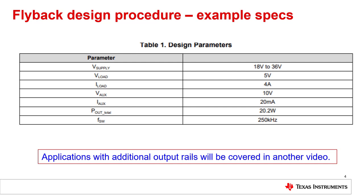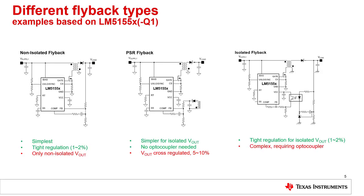We calculated the total power, which is also the starting point for a converter with more than one output rail. There are several different types of flyback converters, and depending on the specifications, it is possible to use all or just some of them. The simplest version is the non-isolated flyback converter — it achieves tight regulation but the input and output share the same ground. If isolation of input and output is necessary, the solution could be a primary side regulated, or PSR, flyback. At the end this is a non-isolated flyback with a second output, so regulation of the primary side output is as good, but the regulation accuracy of the secondary side output is heavily dependent on the transformer design and therefore often not extremely accurate.